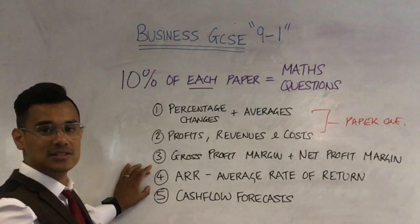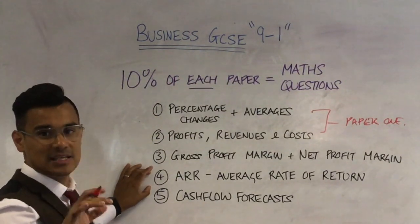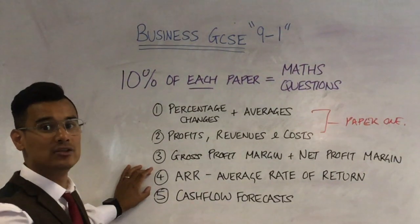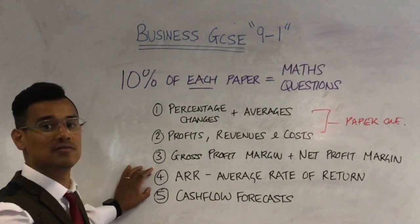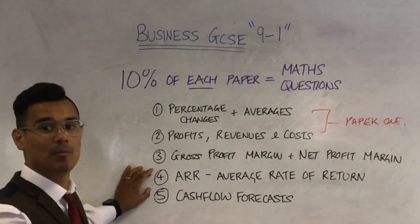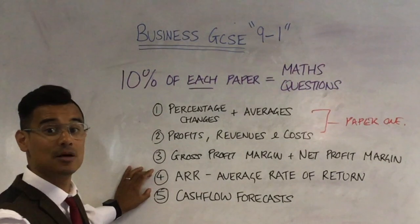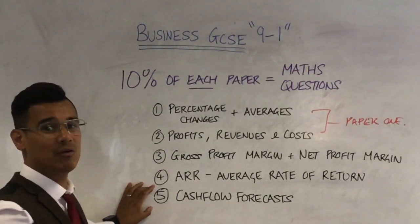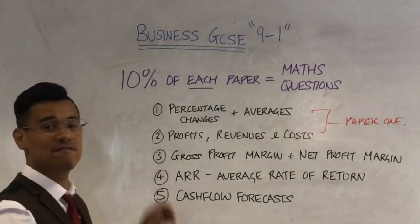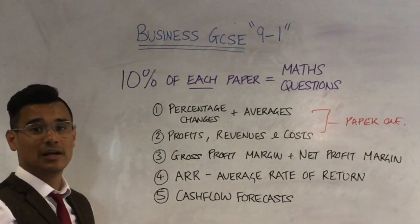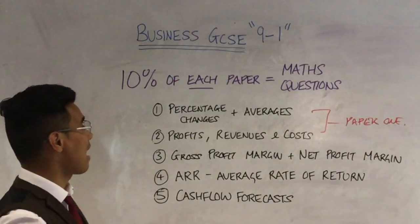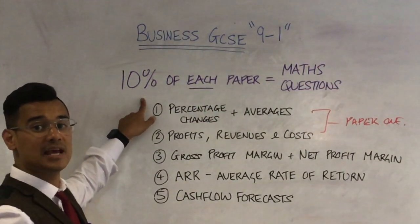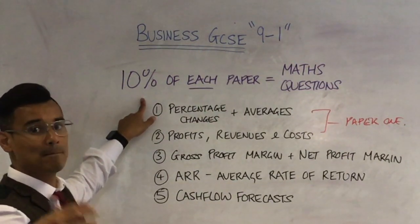Number four — oh my days, this is a banker — ARR, average rate of return. Know it, and do not forget to include the cost of investment on the top half of the formula as well as the bottom half. And number five: cash flow forecast. Expect to see that one. These are five questions so likely to come up because they fit the new rules of having 10% of questions about maths.